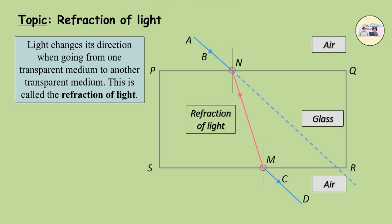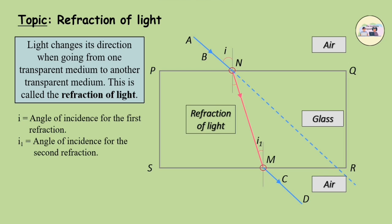For the first refraction, the angle of incidence is I, while for the second it is I1. The angle of refraction at N is R. Note that I1 is equal to R. In the second refraction, the angle of refraction is E, which is equal to I.